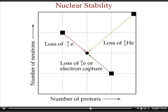To summarize visually: if you're below the belt of stability, you lose a positron or capture an electron; if you're above the belt, you lose an electron (beta emission); and if your atomic number is above 83, you release an alpha particle (helium nucleus).